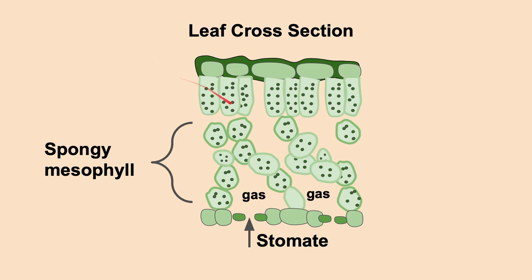They're tightly packed for photosynthesis and what we want to talk about really is down here. We have a layer of cells called the spongy mesophyll. The spongy mesophyll is called spongy because like any sponge you could imagine, it has a lot of air spaces in it and that's where gas builds up. How does the gas get in there? Well carbon dioxide is going to come through the stomate in the bottom of the leaf and build up in spongy mesophyll.